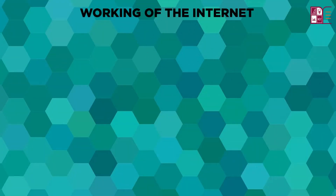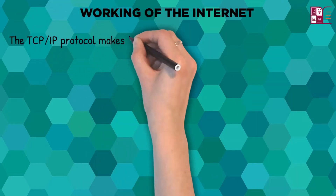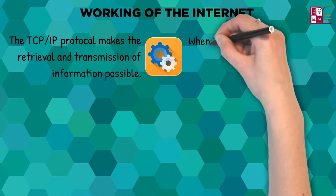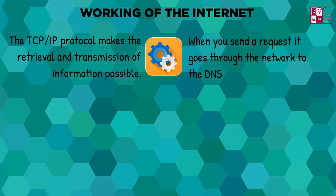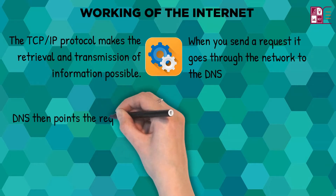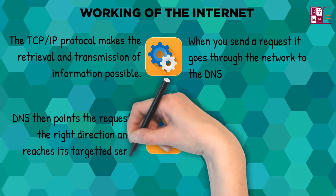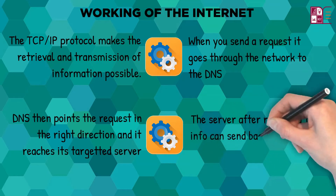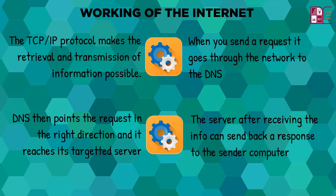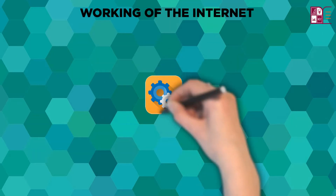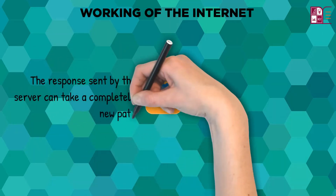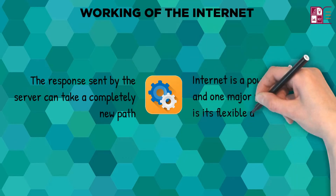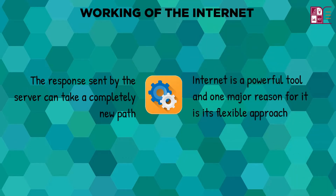Working on the internet: The TCP/IP protocol makes the retrieval and transmission of information possible. When you send a request, it goes through the network to the DNS. The DNS then points the request in the right direction and it reaches its targeted server. Once the request has been received by the server, it can send back a response. The response sent by the server can take a completely new path. The internet is a powerful tool and one major reason for it is its flexible approach to data transfer.